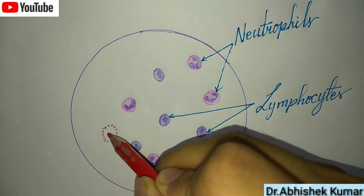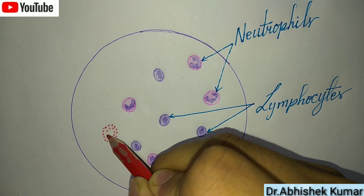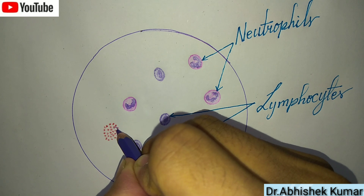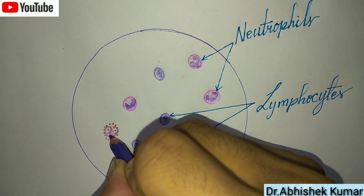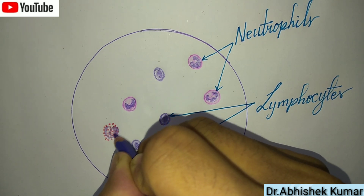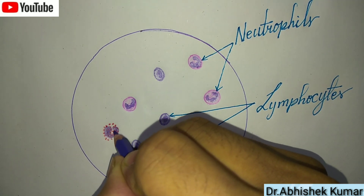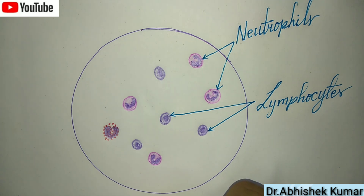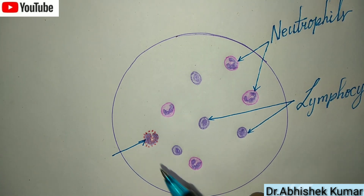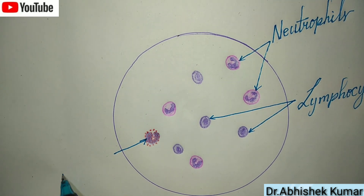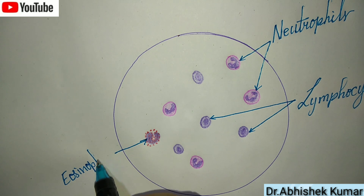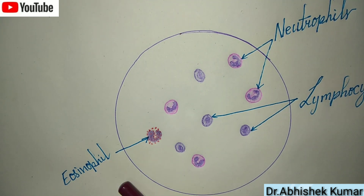Now we are making with red color pencil — these all are RBCs. This is the structure of eosinophil. With the blue color we are representing the bi-lobed nucleus. And large eosinophilic cytoplasmic granules are filled in the cytoplasm. This is also a large blood cell — eosinophil.